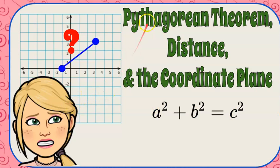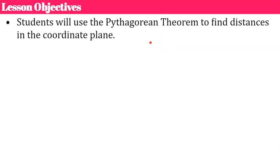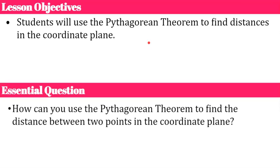Today, my lesson for you is on the Pythagorean Theorem and distance in the coordinate plane. Our objectives today are that you will use the Pythagorean Theorem to find distances in the coordinate plane. And the question I want you thinking about today is how can you use the Pythagorean Theorem to find the distance between two points in the coordinate plane?